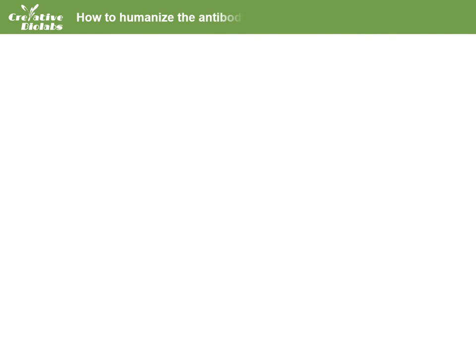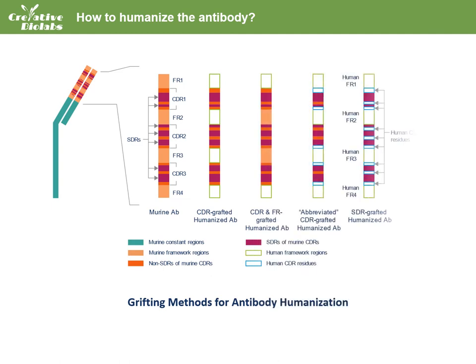The most widely applied methods for producing partially humanized antibodies are the grafting methods. The most used CDR grafting method clones the complementary determining regions, or CDRs, of mouse monoclonal antibody into the corresponding regions of human antibody, to completely or partially replace the CDRs of human antibody, resulting in a CDR-grafted antibody.